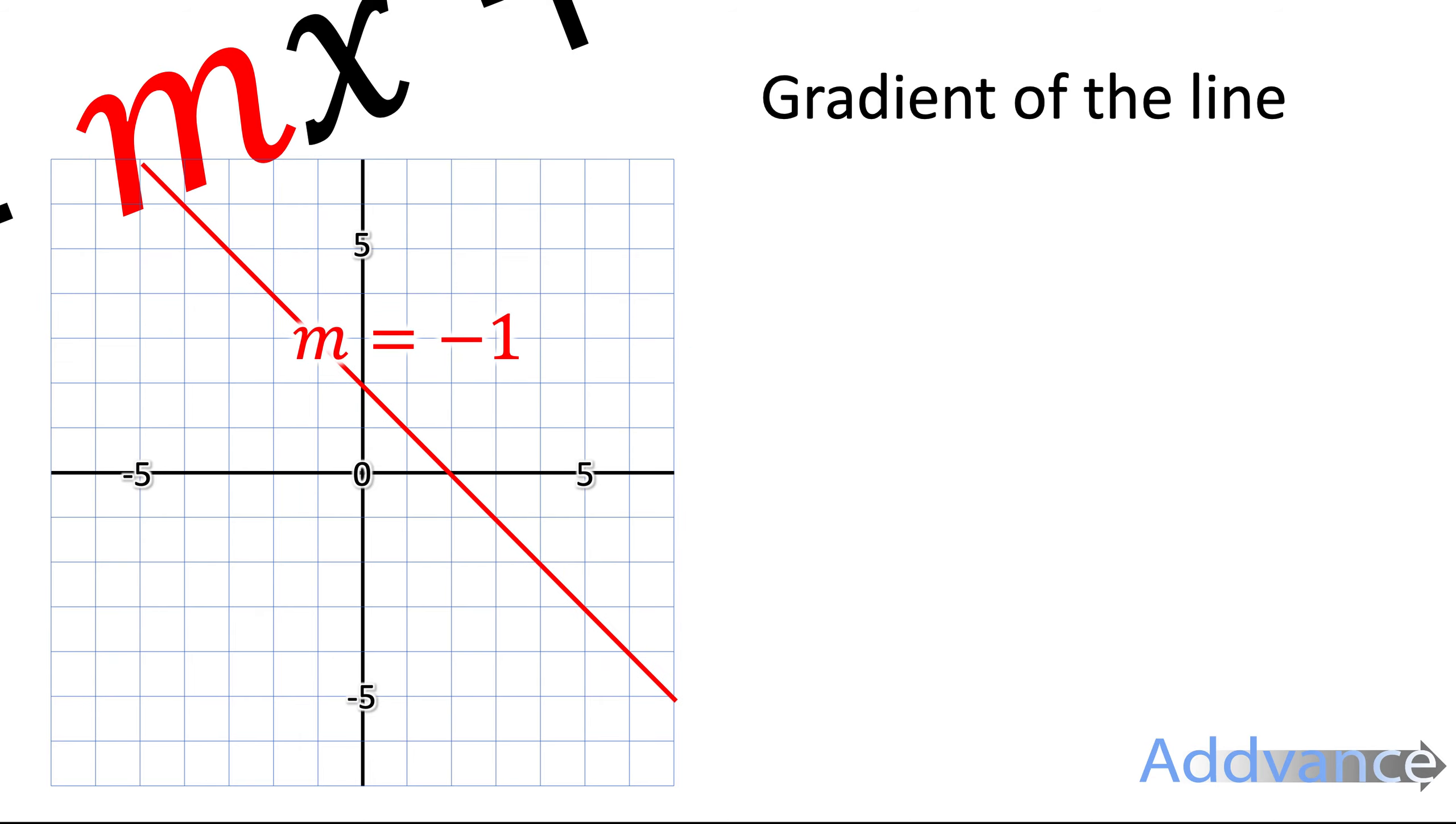Now we've got a negative gradient, and it's starting to go downwards, and we've got a really big negative, which means it's really steep downwards.